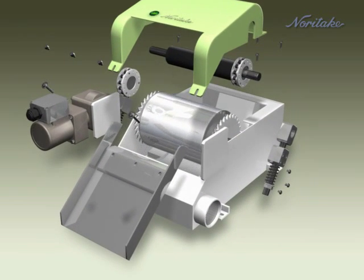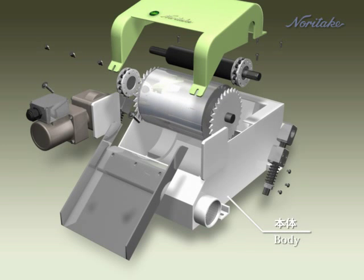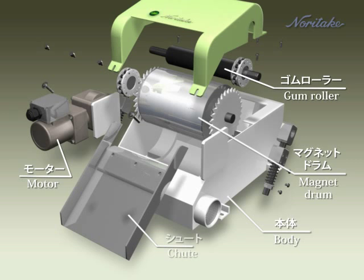The Noritake MagDry consists of the main body, magnet drum, motor, rubber roller, and chute.